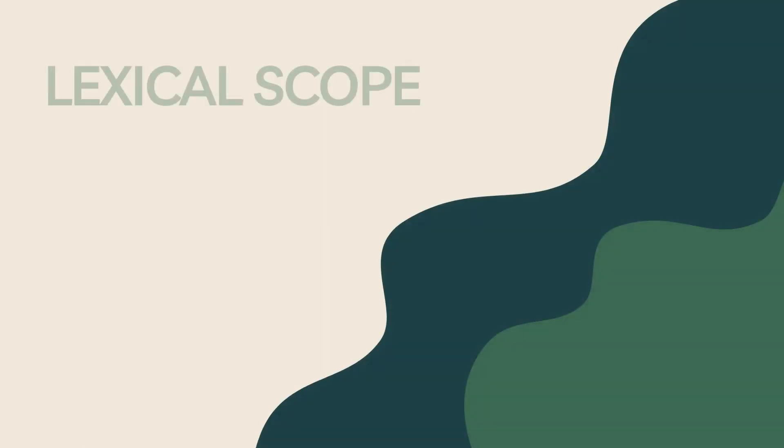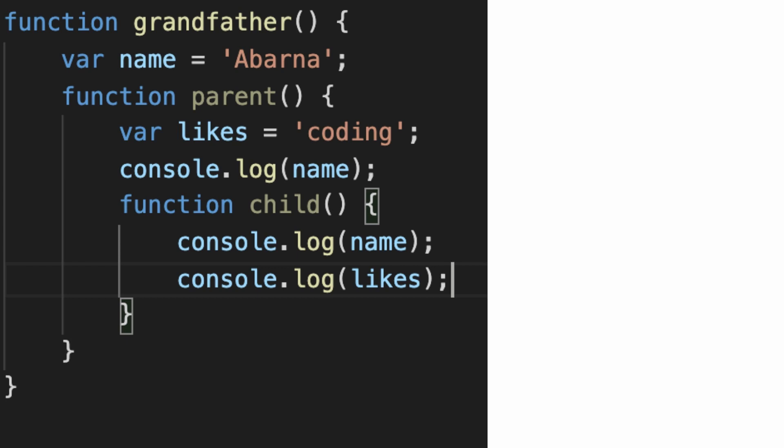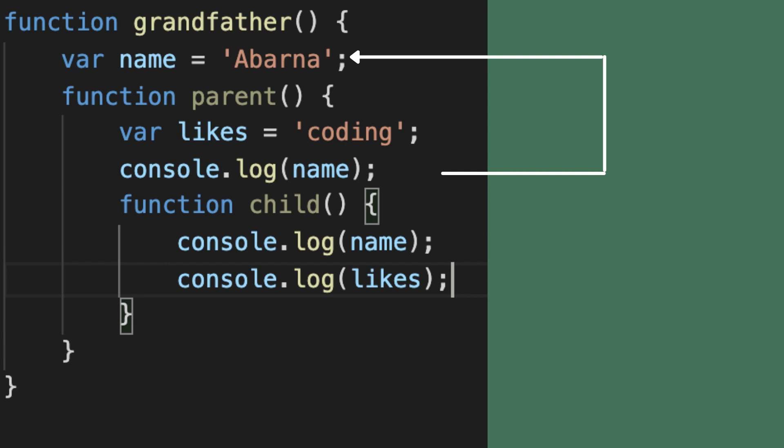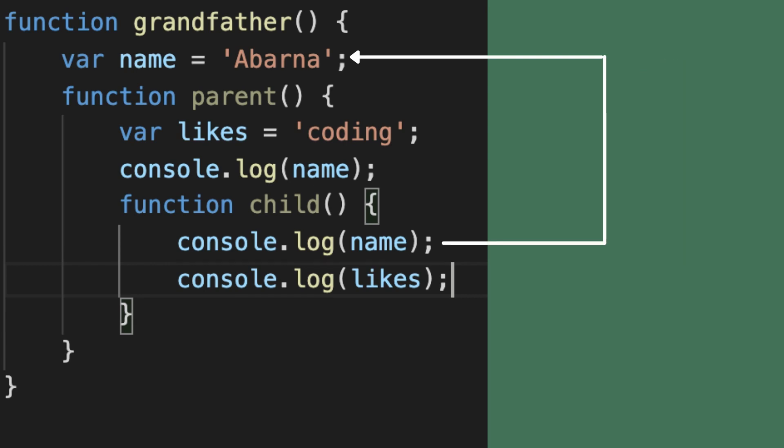Now, let's look at a very important concept in JavaScript called lexical scope. Lexical scope means that in a nested function, the inner function will have access to variables in the outer function. This means the child function is lexically bound to the parent function. Let's look at an example. The innermost function is 'child', 'parent' is the outer function, and 'grandfather' is the outermost function. The parent function can access the variable in the grandfather function, and the child function can access both the grandfather and parent function variables.